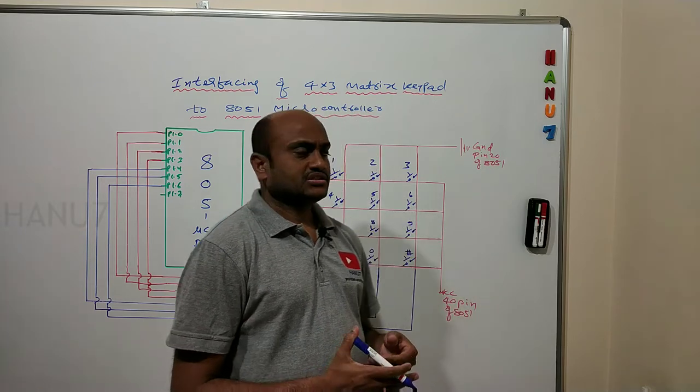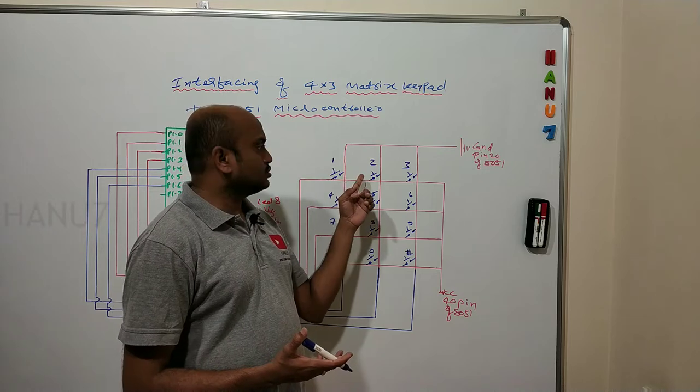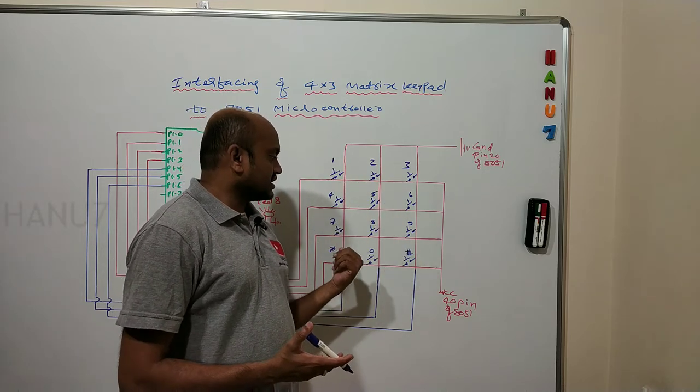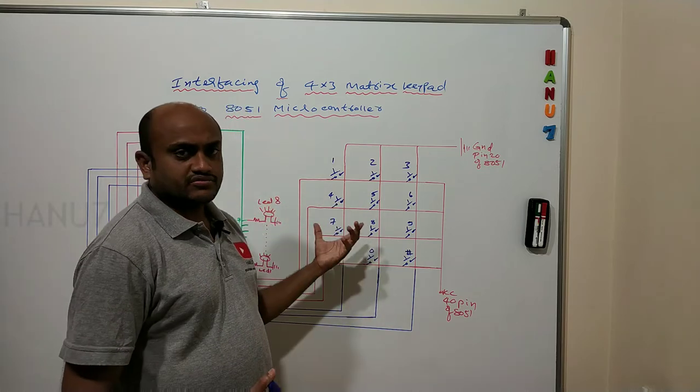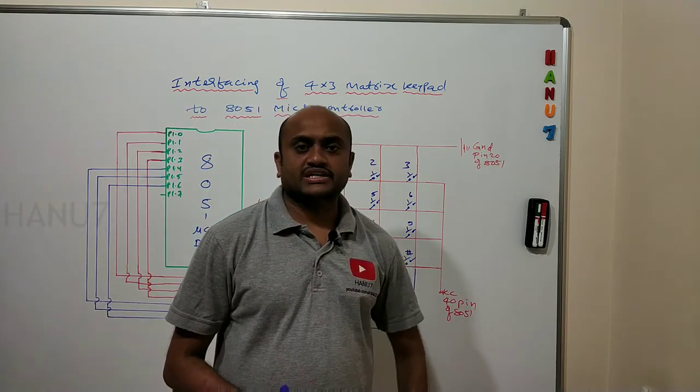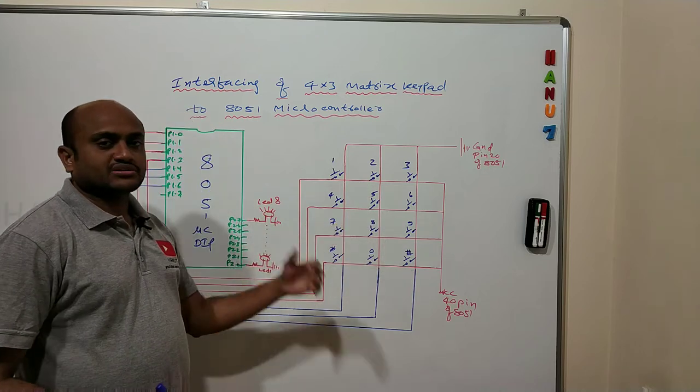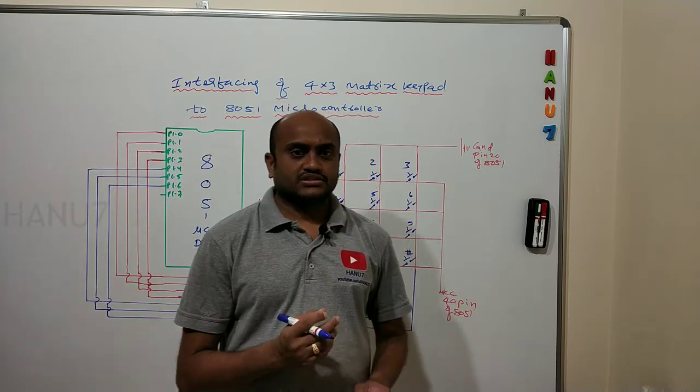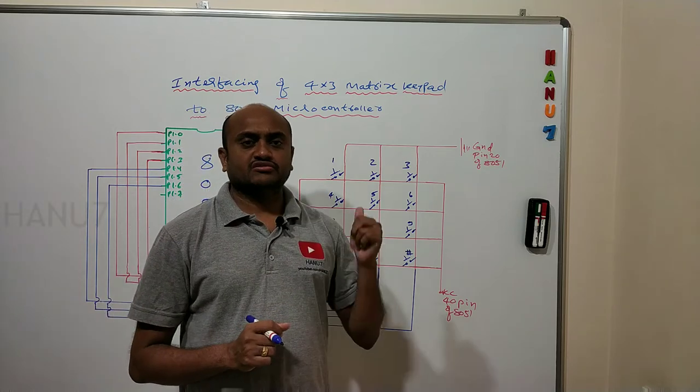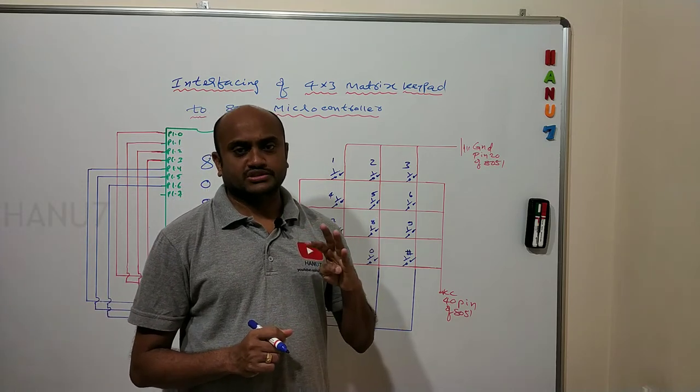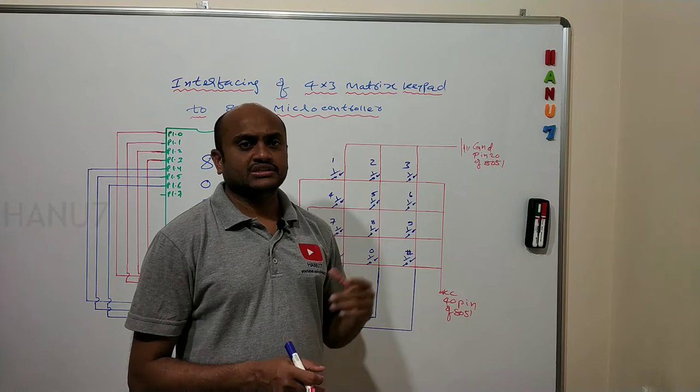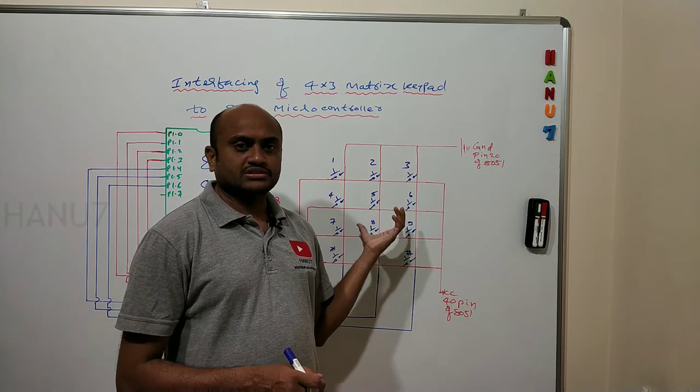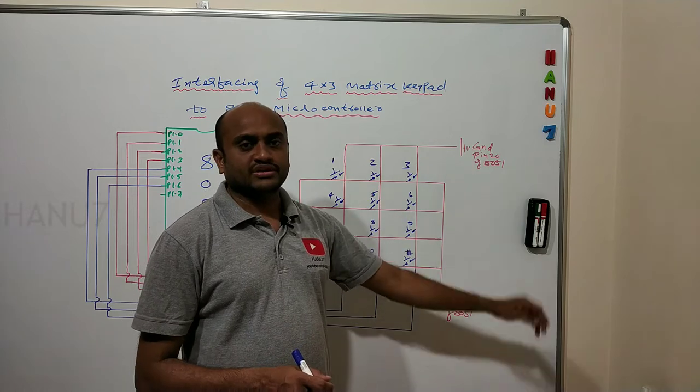It has keys 1 through 9, star, 0, and hash. This 4 by 3 matrix keypad we are going to interface to our 8051 microcontroller. As the name indicates, 4 by 3 means 4 rows and 3 columns. There is one more keypad available in the market which is 4 by 4 also. Here we are learning about only 4 by 3, but the same is applicable to 4 by 4 as well.